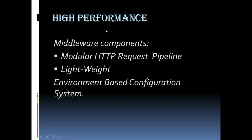ASP.NET Core provides modularity that improves application performance by introducing a concept called middleware — a class that is executed on every request of the ASP.NET Core app. In classic ASP.NET, HTTP handlers and HTTP modules were part of the request pipeline. ASP.NET Core provides a rich set of built-in middleware components similar to those HTTP handlers and modules, and both need to be configured and executed on every request. It is lightweight, and we can also create our own custom middleware components.